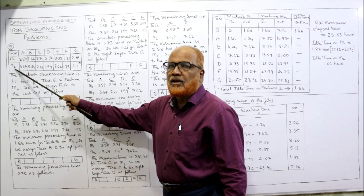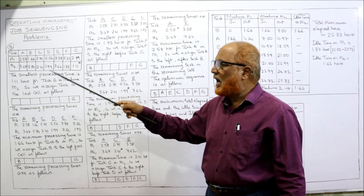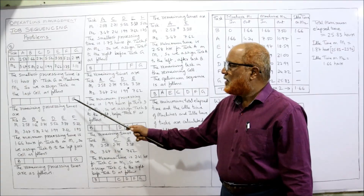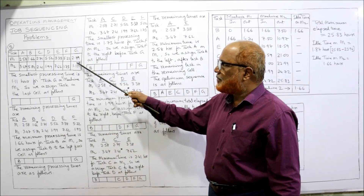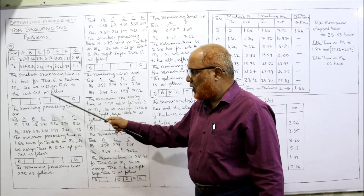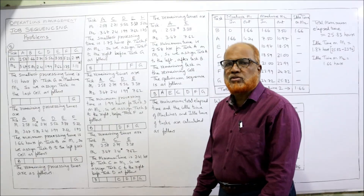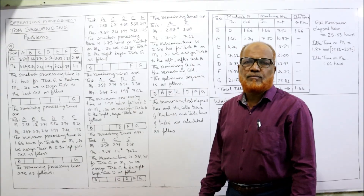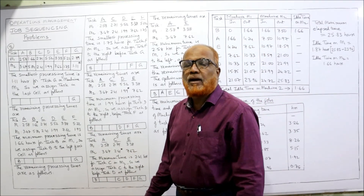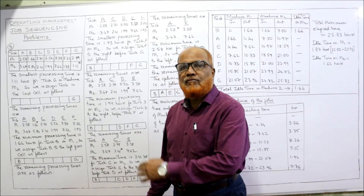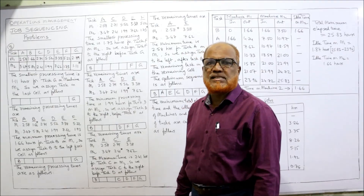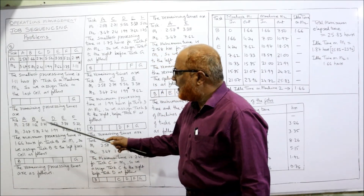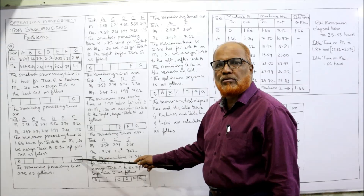Because it is on the second machine — if it had been on the first machine, we would have placed it in the first cell. Now, leaving G aside, consider tasks A, B, C, D, E, F. The minimum time among these is 1.66, which is for job B on M1. M1 means we assign from the left, so task B is assigned in the first cell. G is already in the last cell.